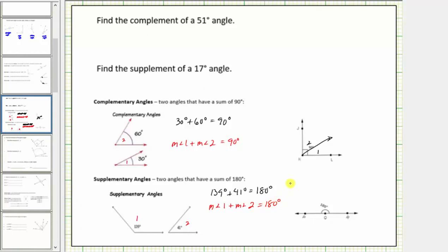Another way to think of this is if we were to combine two supplementary angles, they must form a straight angle. Beginning with this straight angle here, if we break this up into two separate angles using this ray, and call this angle one and this angle two, the sum of the measures must equal 180 degrees, and therefore together they form a straight angle.